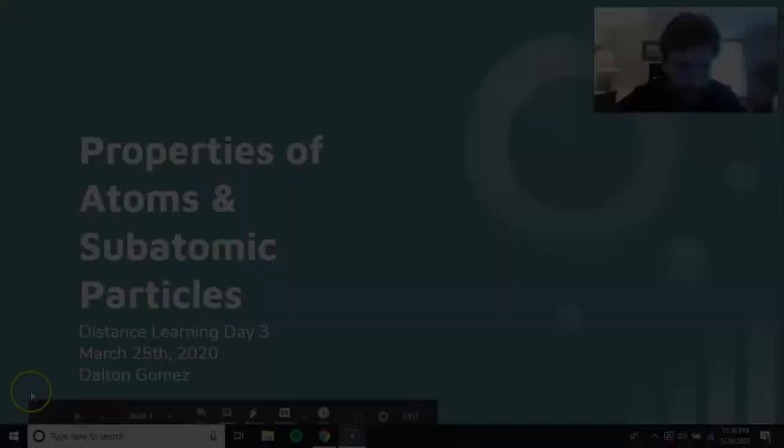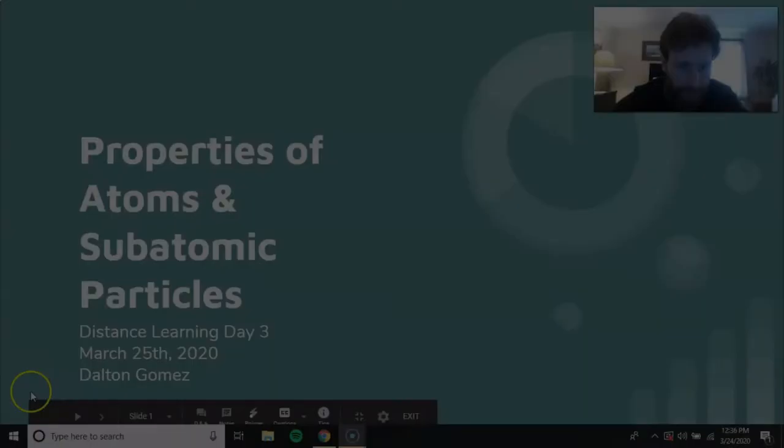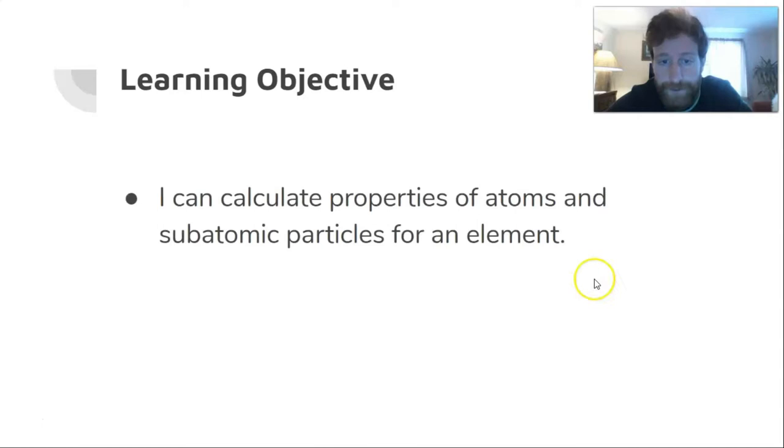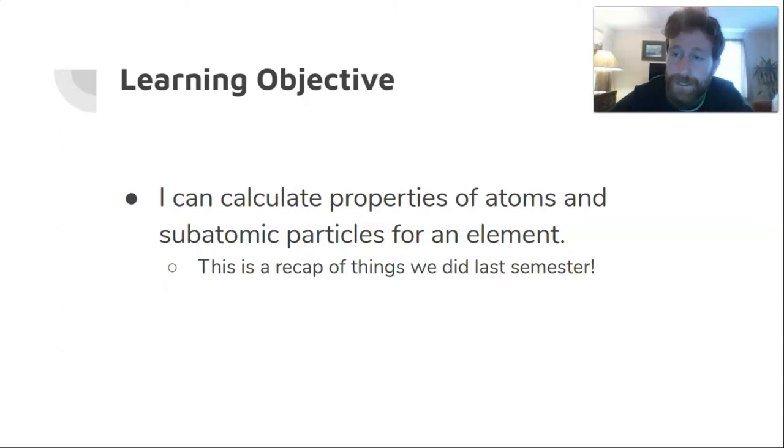Welcome to the computer. We're going to start off on our chemistry curriculum, which we'll do for the next few weeks, starting off with something we actually did touch upon last semester when we were doing nucleosynthesis and fusion in the Sun: properties of atoms and subatomic particles. My goal for you from this lesson would be to calculate properties of atoms and subatomic particles for an element. Remember that this is a recap of things we did last semester because atoms and elements are created inside stars through a process called nucleosynthesis or nuclear fusion.